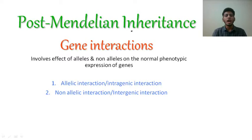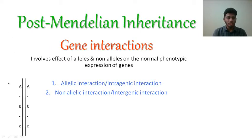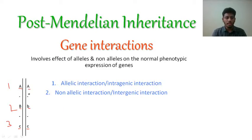Post-Mendelian inheritance does not follow the Mendelian monohybrid and dihybrid cross ratios. Under that we have a topic called gene interactions. Until now, what we have studied is that a single gene has two alleles and these two alleles correspond to one particular character. In a heterozygous condition the dominant allele expresses while the recessive one gets suppressed — this is what we studied in Mendelian principles.